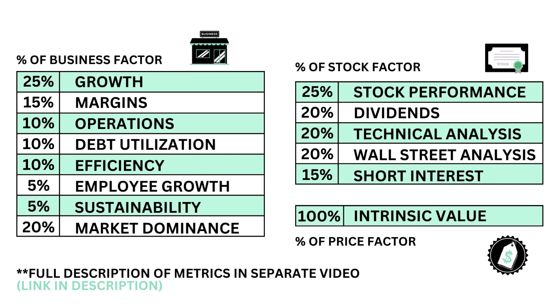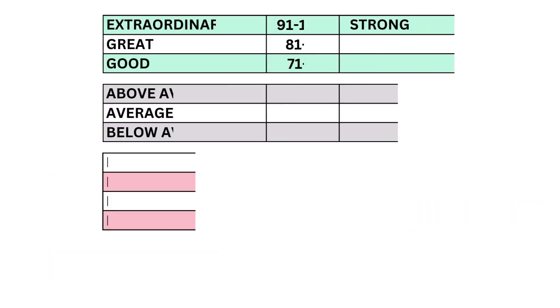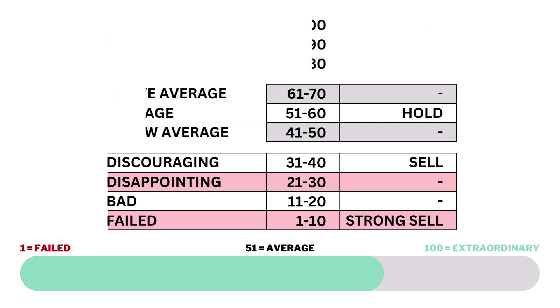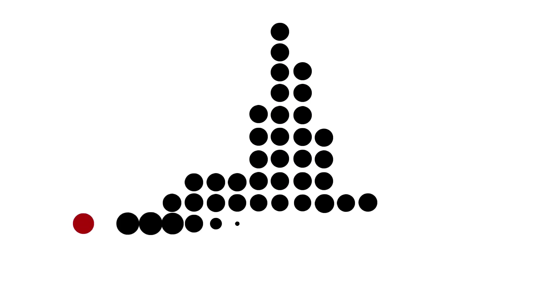Within each factor, a total of 14 metrics from business growth performance to intrinsic value. Because each company belongs to a specific sector of the economy, my analysis normalizes the data so you can compare grades between companies of different sectors. Each of the three factors and 14 metrics are given a grade from 1 to 100, with 51 to 60 being considered average.